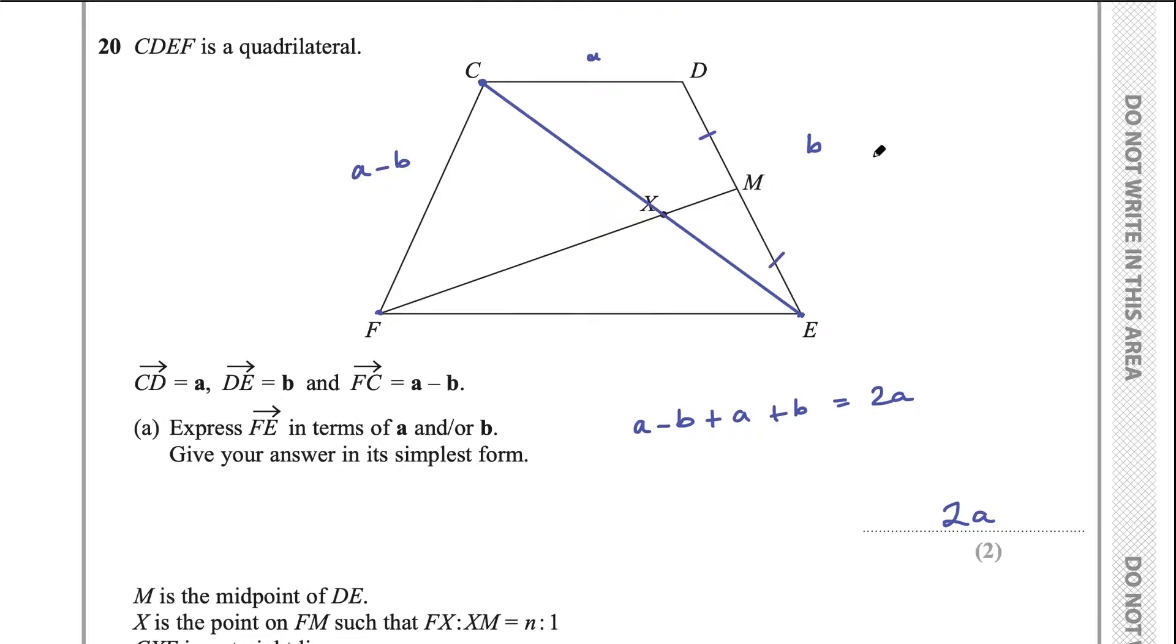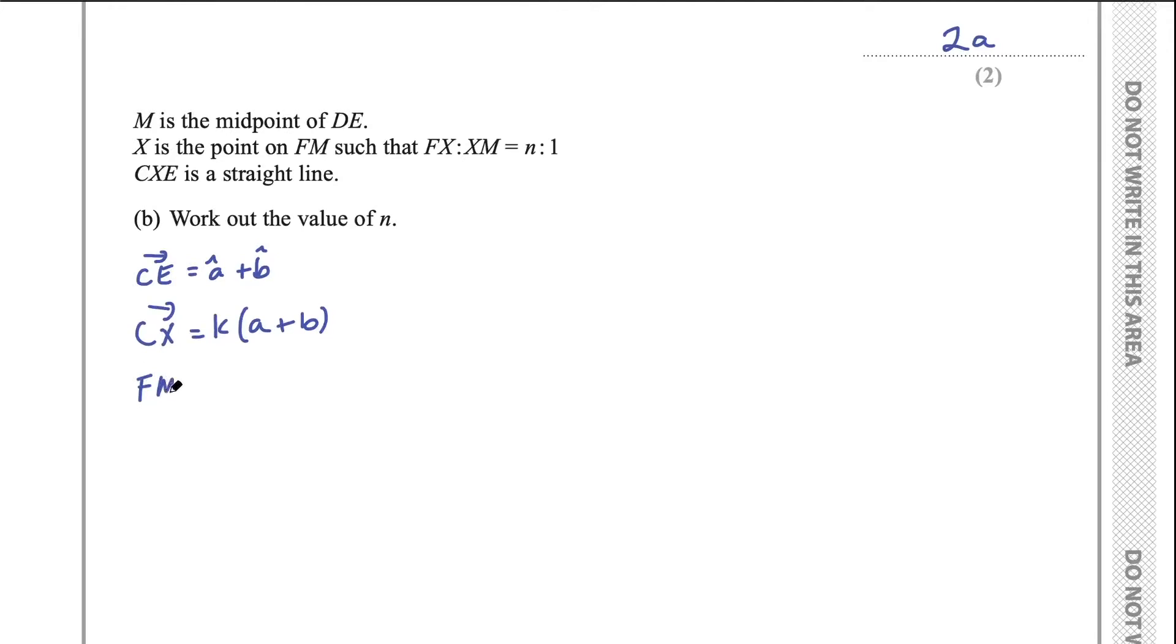Now, we have this ratio of FX to XM of n to 1. So this ratio here is n to 1 for this line. So now I want an expression for FM, the vector FM. So we said from part A, FE is 2a. So FE 2a take half b will get me to M. So FM could be written as 2a take half b. So that's my next step.